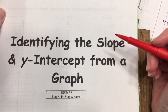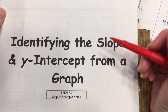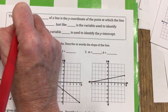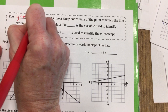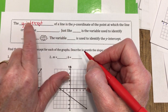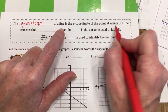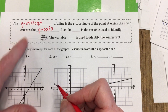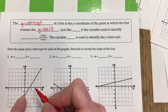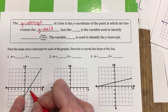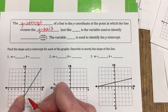We're going to look at identifying the slope and the y-intercept from a graph. The y-intercept — if you think about the word 'intercept,' it sounds like 'intersect' — is the y-coordinate of the point at which the line crosses the y-axis. So the y-intercept is where the line crosses the y-axis, right here.